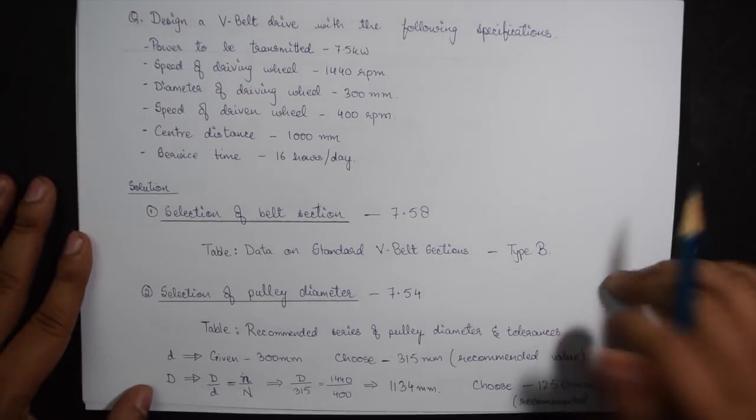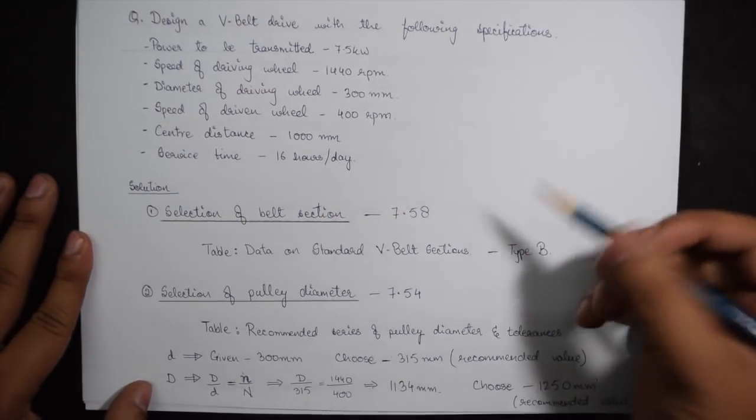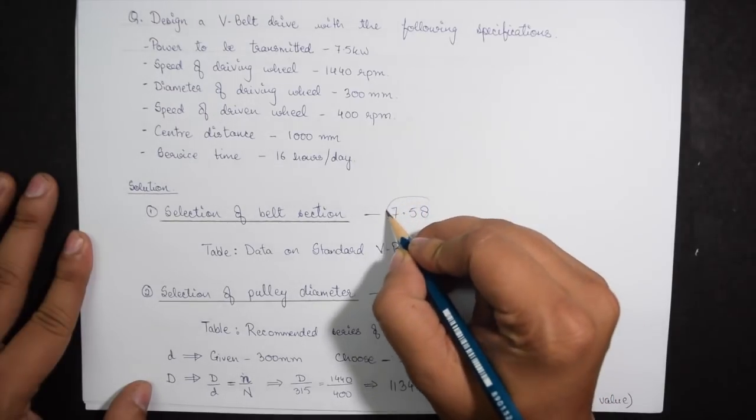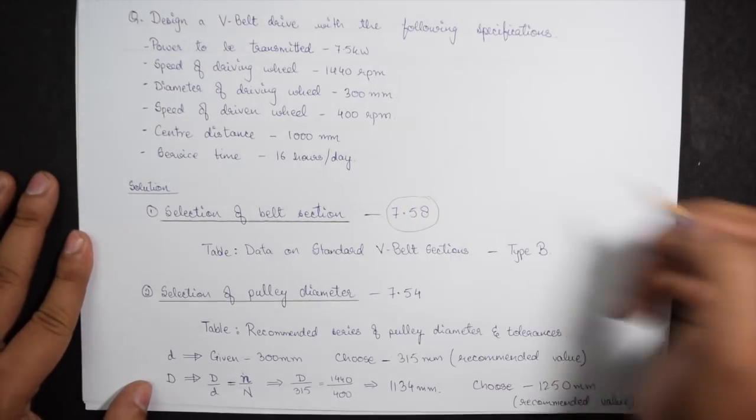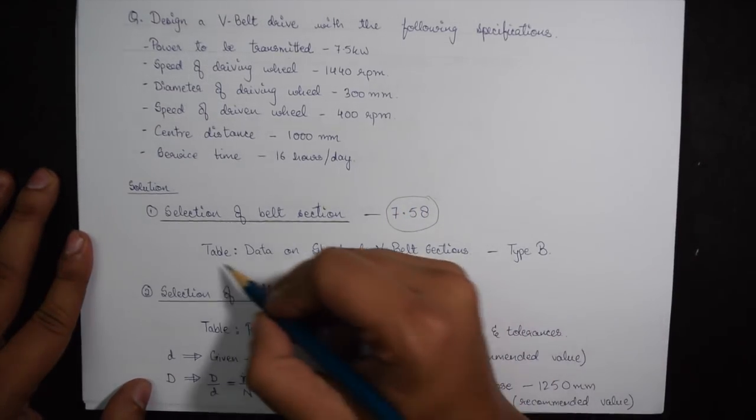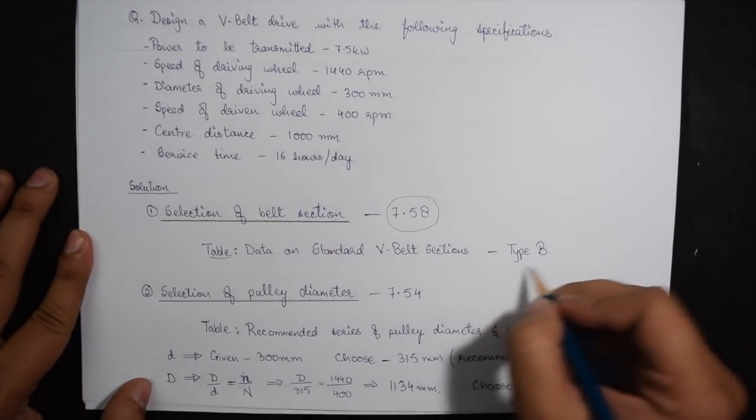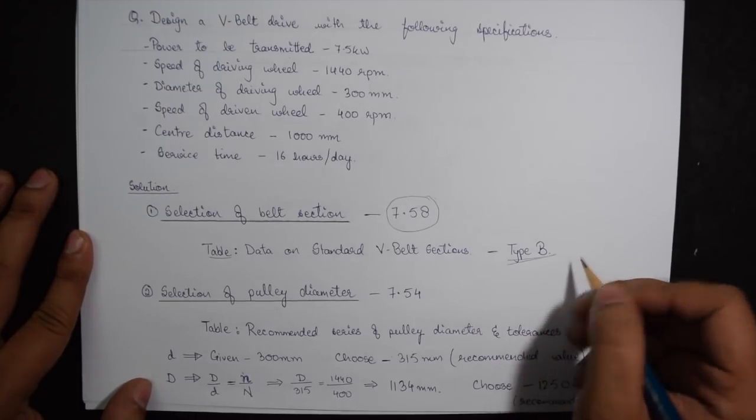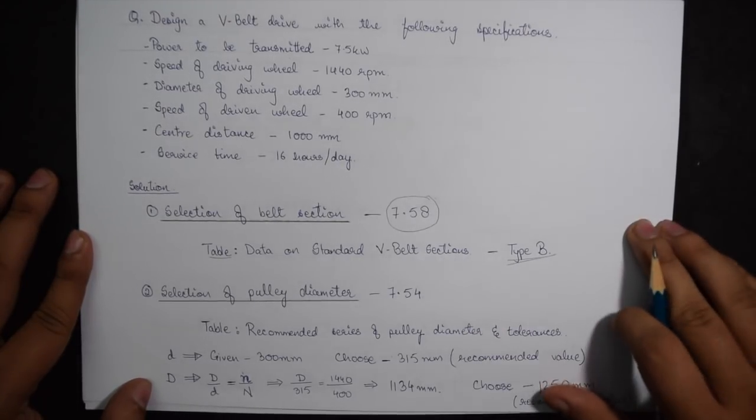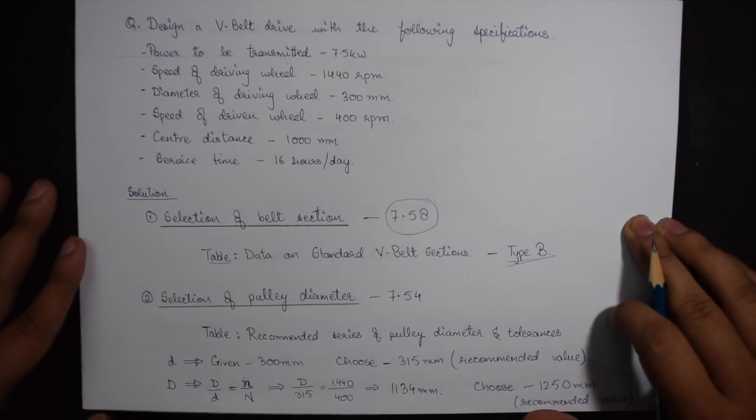So the very first step is selection of belt section which is given on page number 7.58. Under the table data on standard V-Belts sections, we will be choosing belt type B. Any of the five belts can be chosen but for this question let us go with belt type B.